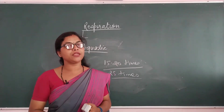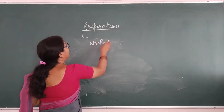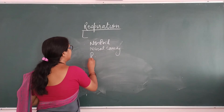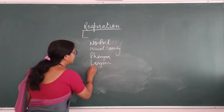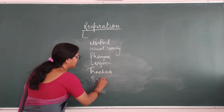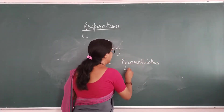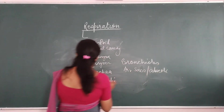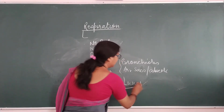Now let's talk about the human respiratory system. The organs of the respiratory system are: nostrils, nasal cavity, pharynx, larynx, trachea. The trachea divides into bronchi, which further branch into bronchioles, and then into air sacs called alveoli. From the bronchi onwards — bronchi, bronchioles, and alveoli — all these structures are found inside the lungs.